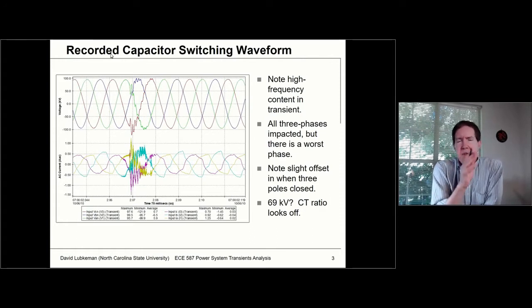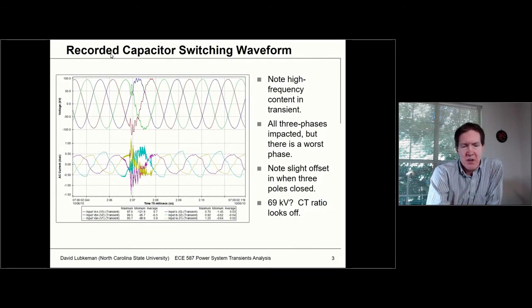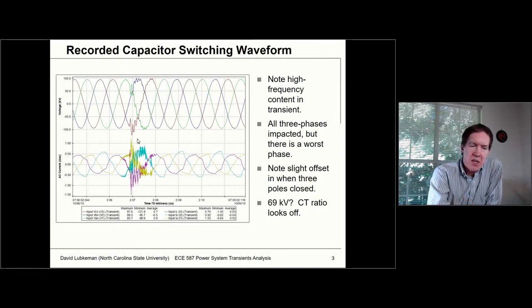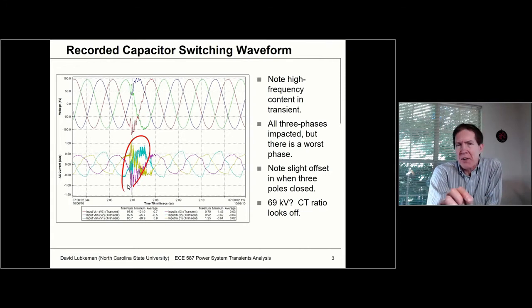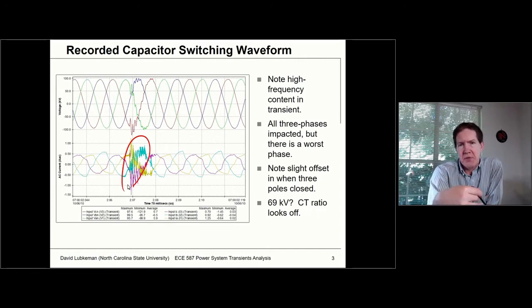So what do these capacitor switching waveforms look like? This is actually a recording on a 69 kV system. I don't believe the current scale is correct — I think the CT ratio wasn't plugged in properly. But what you see is some normal load current, kind of starting out in steady state with some harmonics. When the capacitor switches in, you can see there's a high frequency inrush type of transient. After a while it damps out because there's resistive damping, but you see a high frequency component superimposed on the 60 Hz waveform.